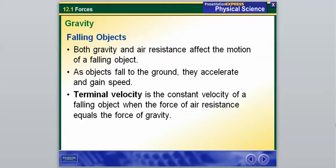Both gravity and air resistance will affect the motion of a falling object. As objects fall to the ground, they accelerate and gain speed. If you remember from our last chapter, we learned that they accelerate at 9.8 meters per second squared. That's the force that gravity will exert on an object.